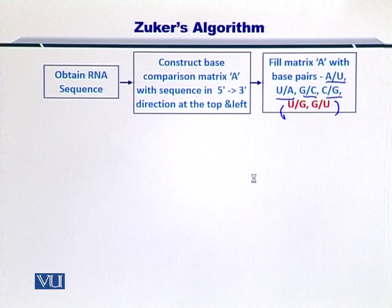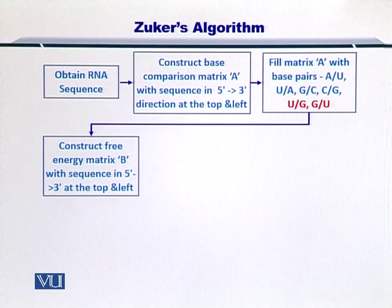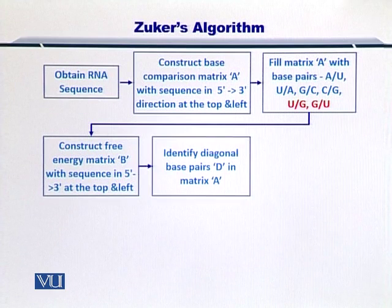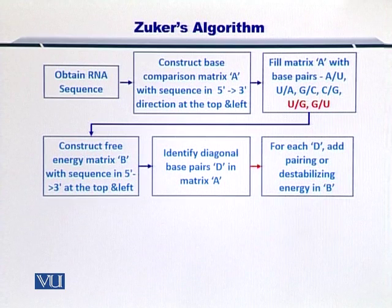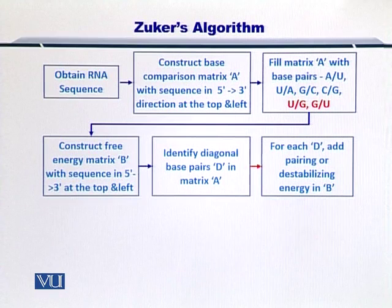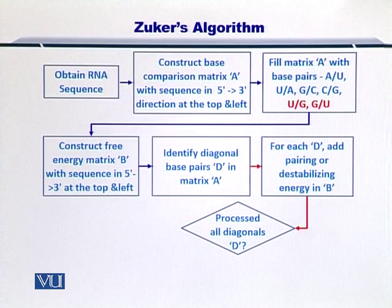Of course, you know that these are the wobble base pairs. Next, once you have filled matrix A with the base pairs, you construct the free energy matrix B with the RNA sequence in 5' to 3' at both the top and the left side. Then you have to identify the diagonal base pairs D in matrix A as we just discussed. For each diagonal, you have to add pairing or destabilization energy in matrix B. Once you have filled up the entire matrix B by looking at the energy given out as a result of bond formation, or the energy left inside the RNA structure as the result of an unpaired nucleotide, you process all such diagonals that exist within matrix A one by one.